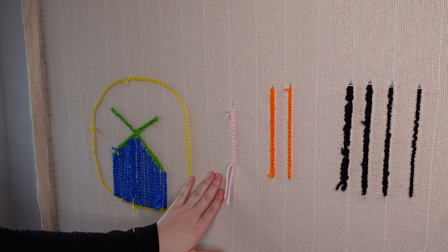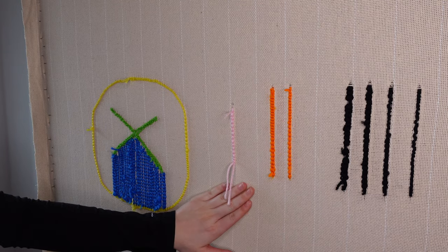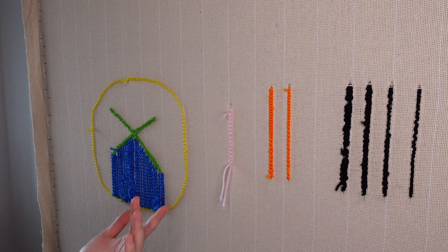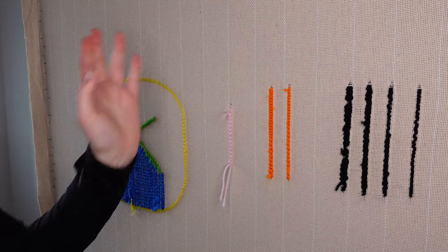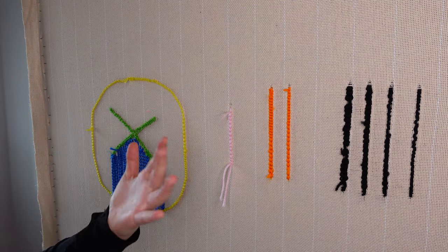And it comes out just as good as the first one. So this is what they both look like right next to each other. This works really well if you are tufting diagonal lines or curved lines or if you just have an intricate design that you have to tuft.